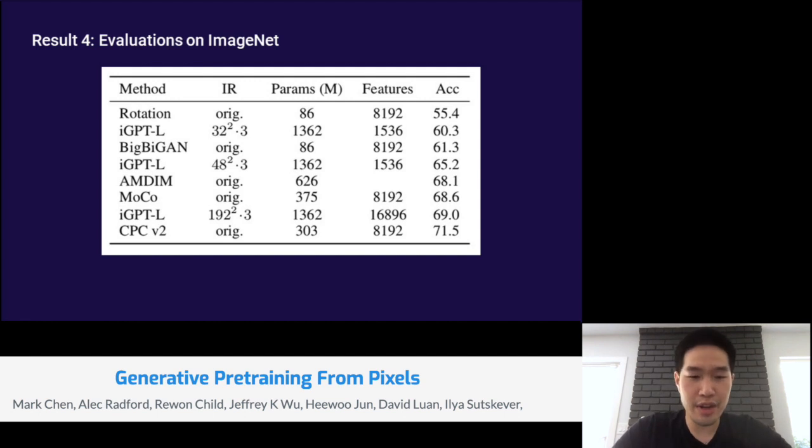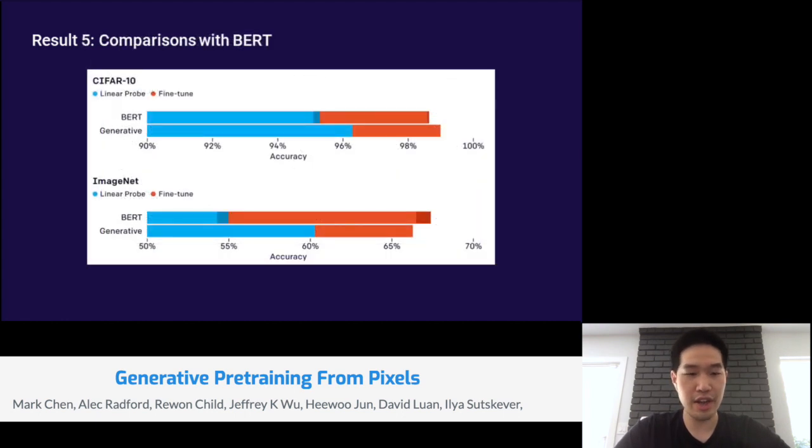Finally, I want to spend just a minute talking about fine tuning results on ImageNet. Here we fine tune at the low resolutions of 32 by 32 and 48 by 48. Our results are 66.3% accuracy at the low 32 by 32 resolution and 72.6% accuracy at 48 by 48 resolution. Unfortunately, this still underperforms the state of the art, which is achieved by isometric neural nets, which get 70.2% at 28 by 28 resolution.